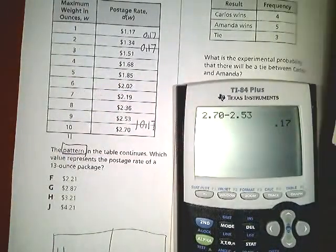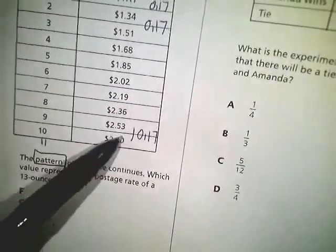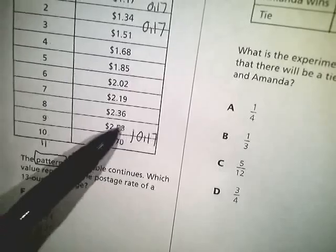If subtraction didn't work, I would try divide, and then I would know that I keep adding 17 cents every time because I subtracted to get to 17, and so I just add 253 to 17 to get 270.